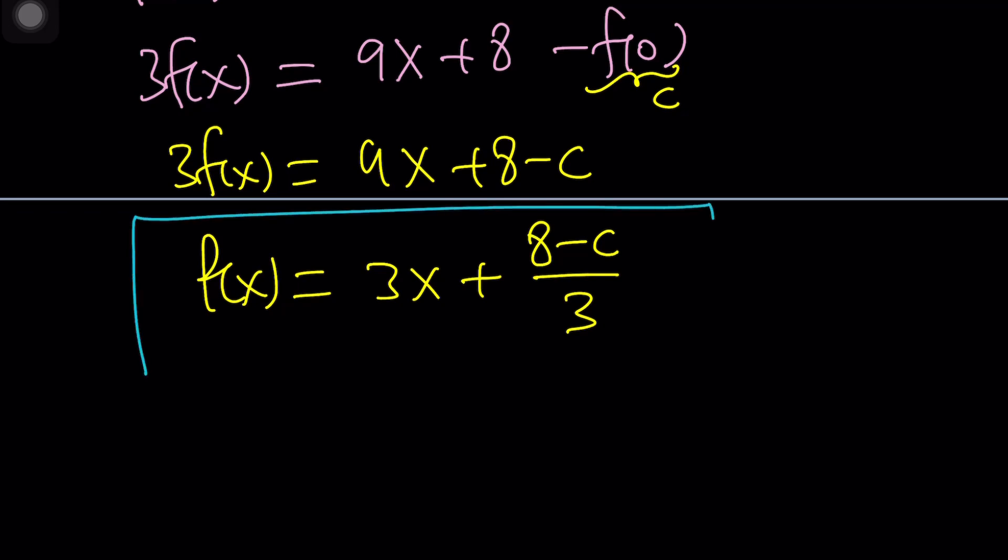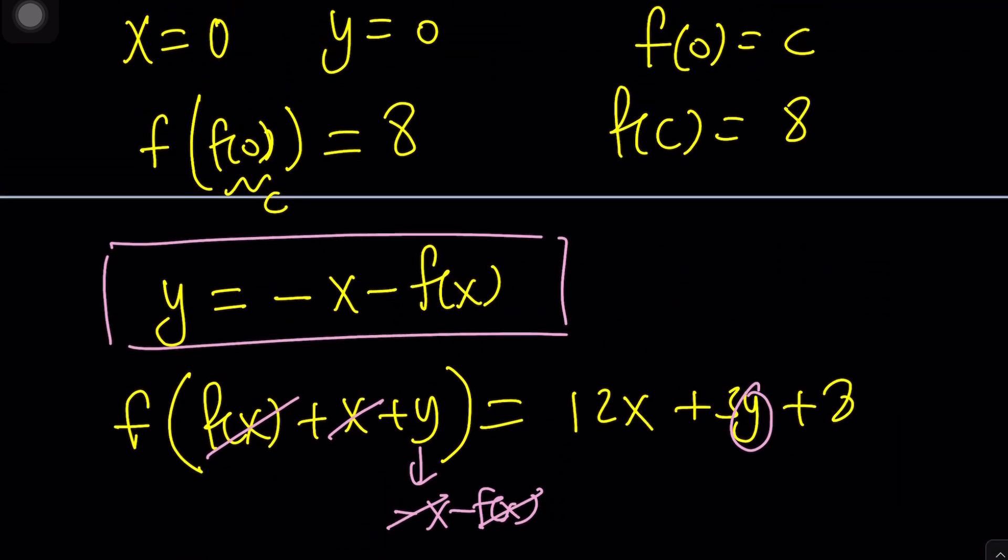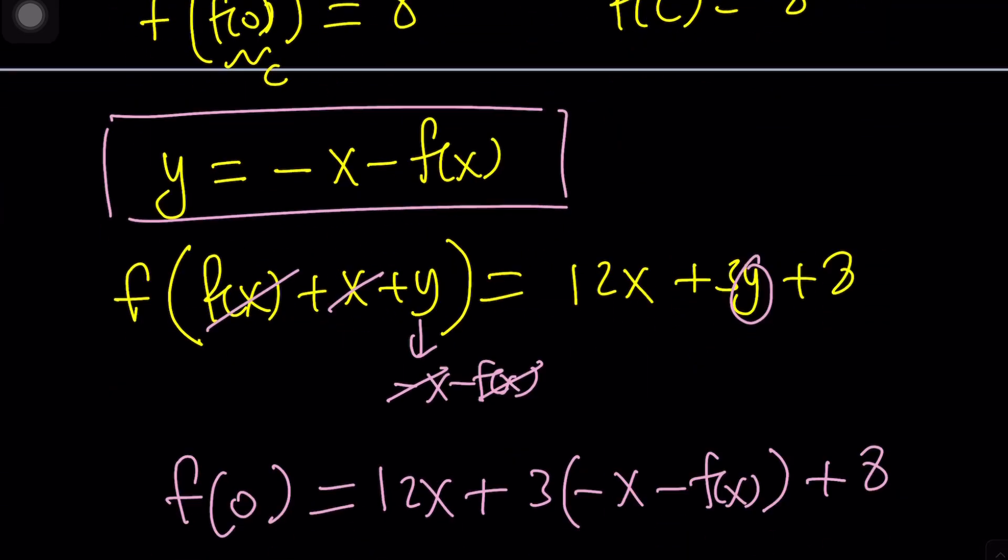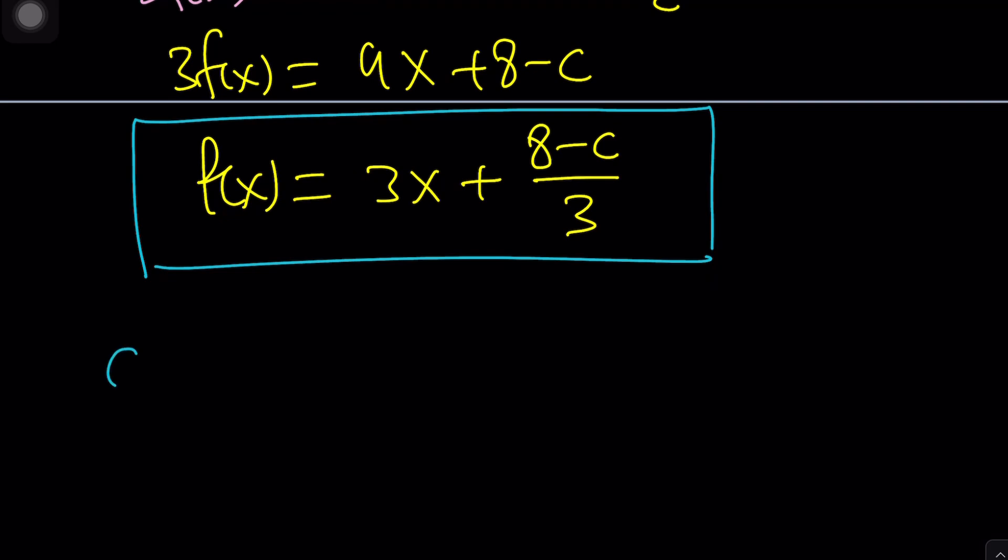Well, finding c, is that easy? Think about it. What is it? What is c? c is f of 0. Remember that? So, all we have to do is, if you're trying to find c, replace x with 0, and you got it. Replace x with 0, you're going to get 0 plus 8 minus c divided by 3.